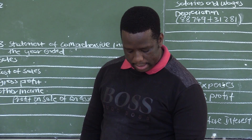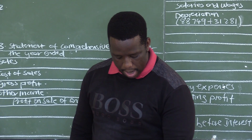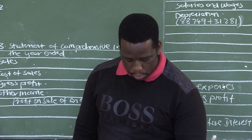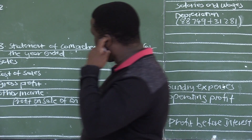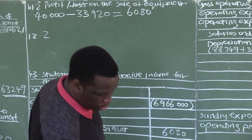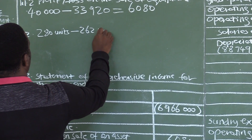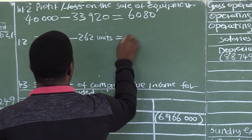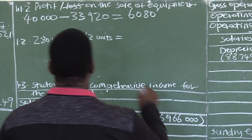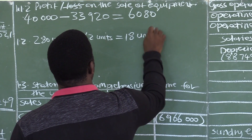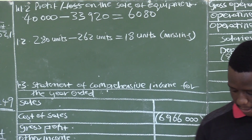The ledger account and records reflect that 280,000 units should be on hand, so we are supposed to be left with 280 units. However, the physical stock count reflects only 262 units, so some units have gone missing. The records show we should have 280 units, but we only have 262 units — that means 18 units are missing.